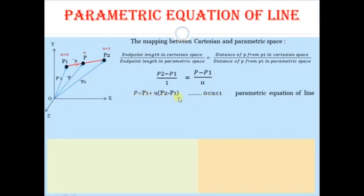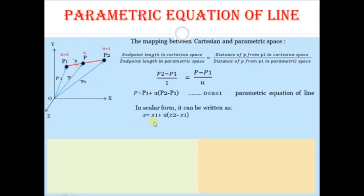Using this parametric equation we can find any point P and its coordinates on the given line between endpoints P1 and P2, or slightly outside. In scalar form, the equation becomes: X = X1 + u(X2 − X1), Y = Y1 + u(Y2 − Y1), and Z = Z1 + u(Z2 − Z1).